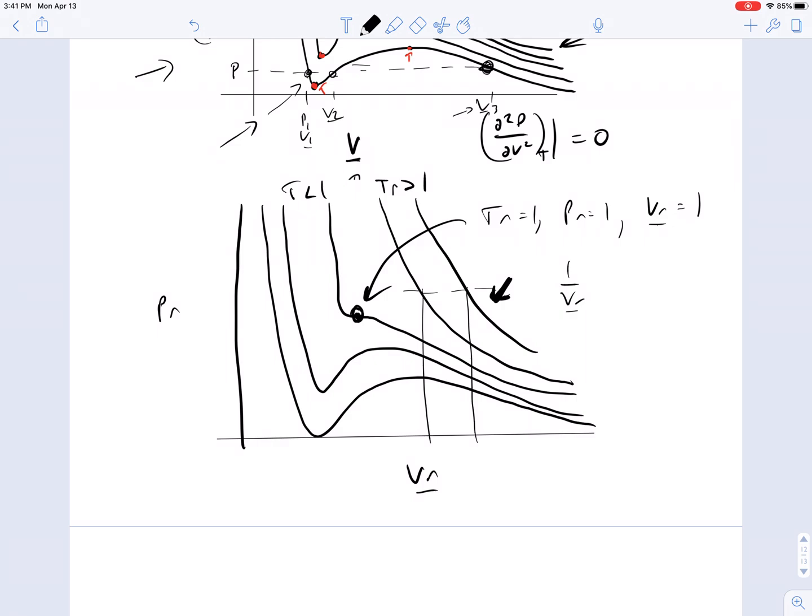So this is a very convenient way to instantly just reference in your mind the relative value of the temperature, pressure, and volume to the critical temperature, pressure, and volume to know what kind of regime you're operating in without even having to think about it very much.